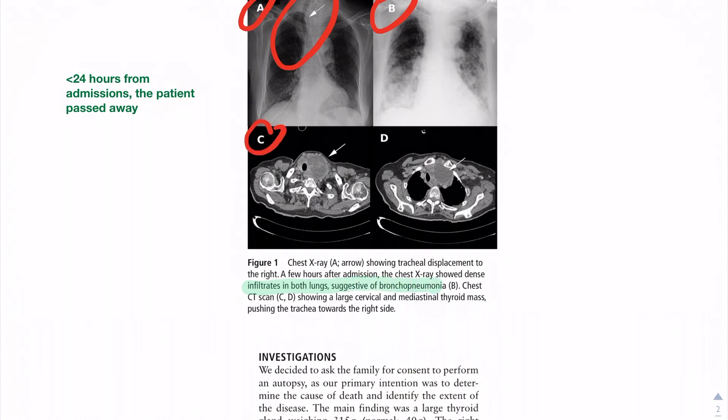They did also a CT, as you can see in C and D, that showed cervical and mediastinal thyroid mass pushing the trachea towards the right side. So you can see this is the mass, and this is the trachea.